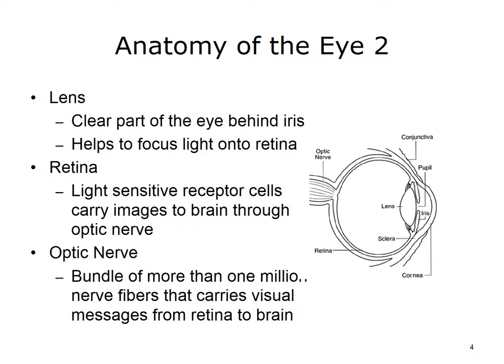The lens is the clear part of the eye behind the iris. It helps to focus the light onto the retina. The retina contains the light-sensitive receptor cells that carry images to the brain through the optic nerve. The optic nerve is a bundle of more than one million nerve fibers that carry visual messages from the retina to the brain.